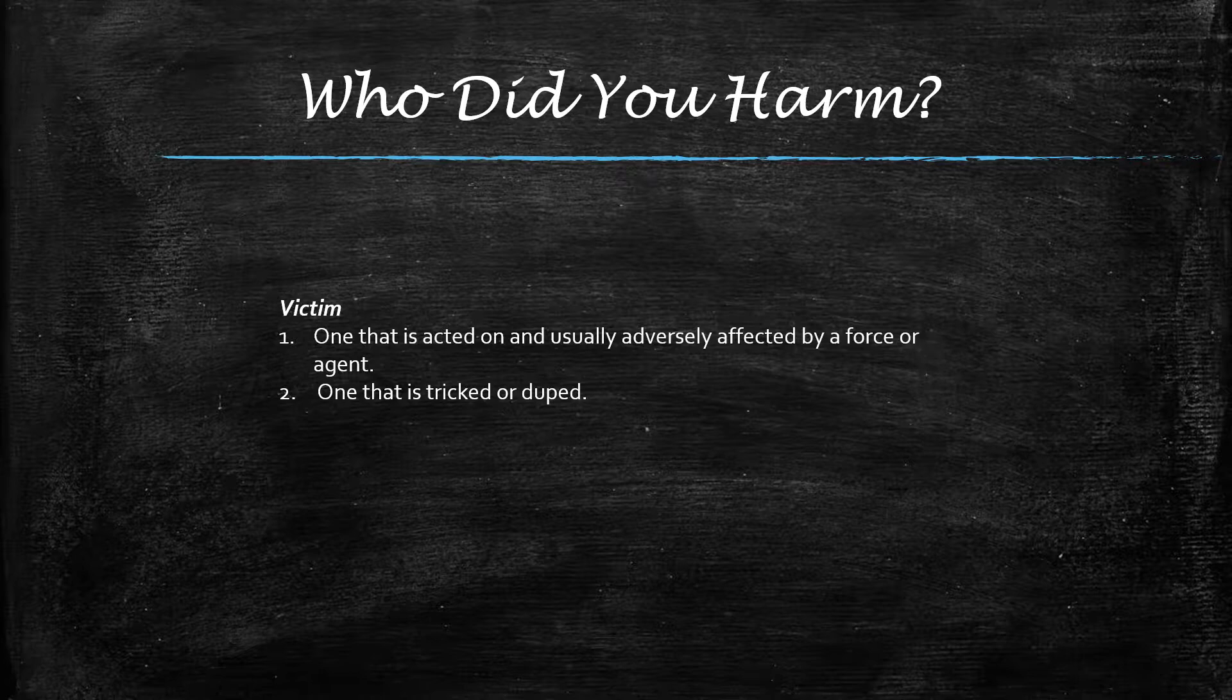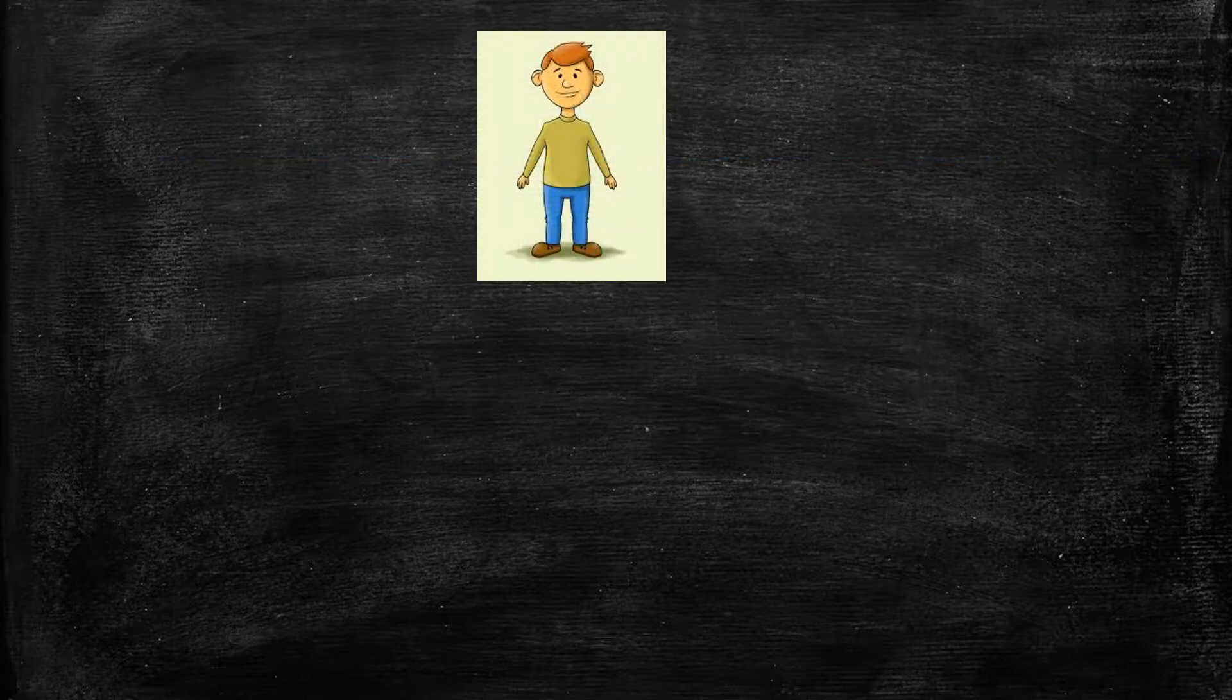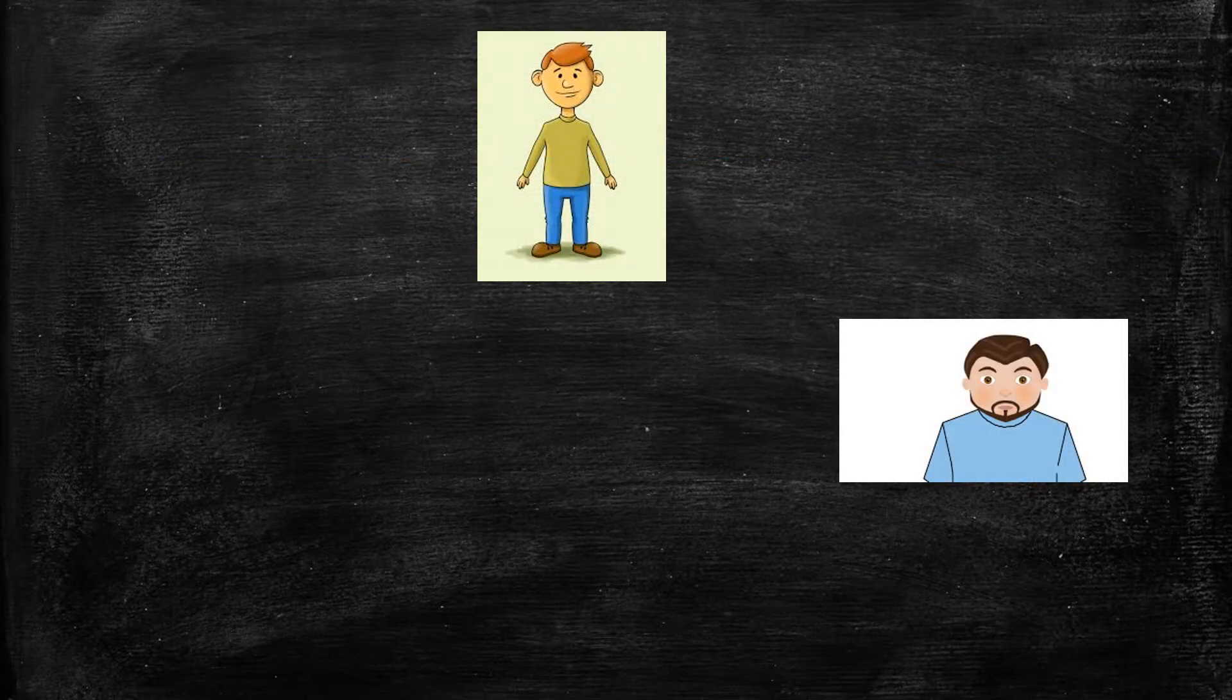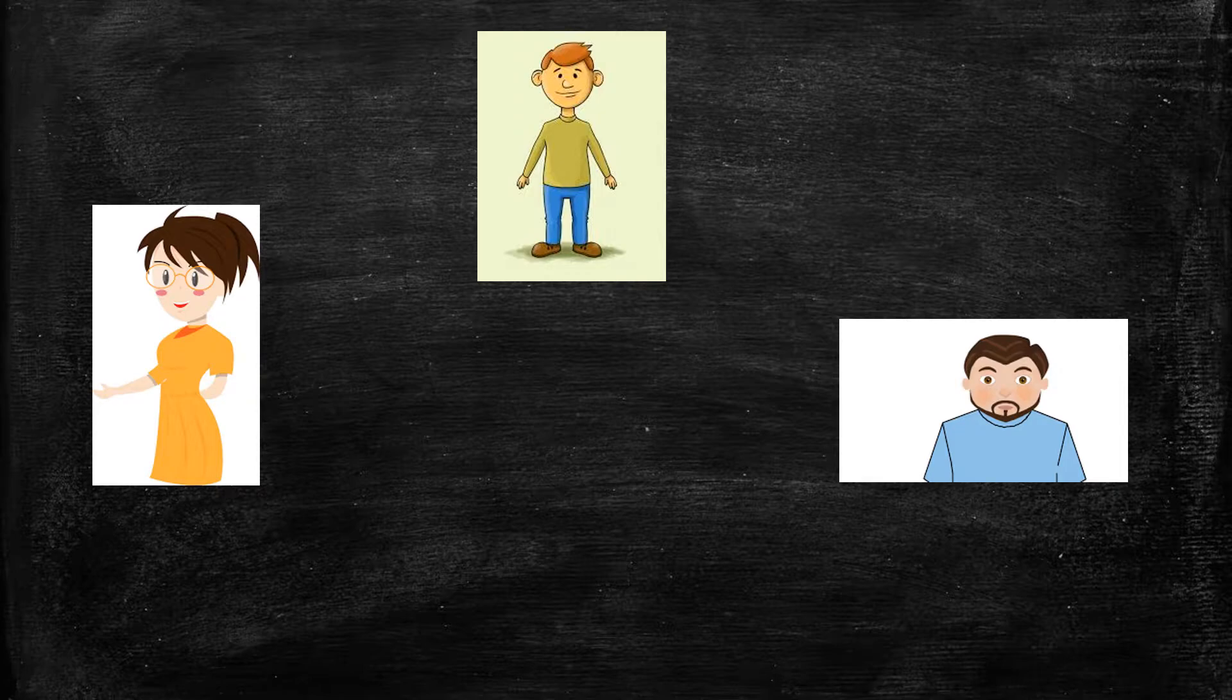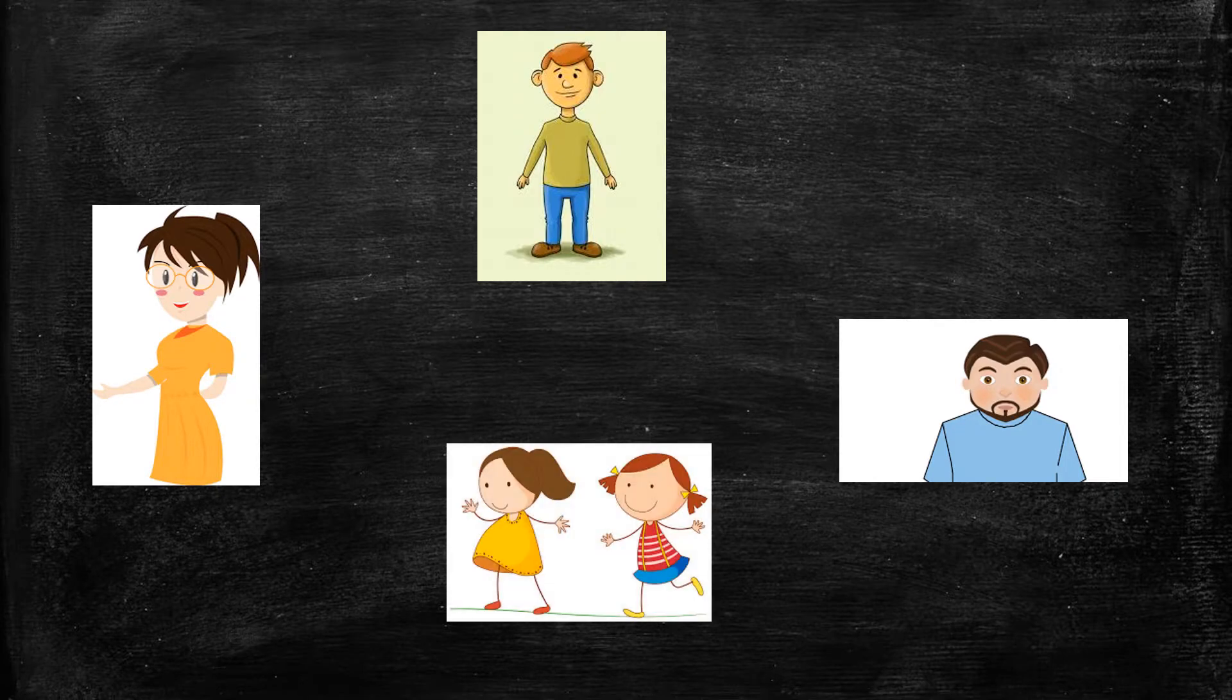For instance, Theo had an affair with Dominic, but his wife Stacy found out and is angry with him. They have kids who have been bystanders to their fights.